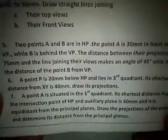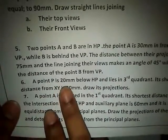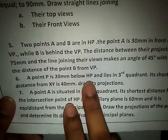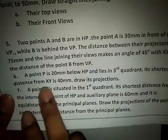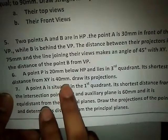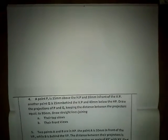We have a sixth equation, see here. A point capital P is 20mm below HP and lies in third quadrant. Shortest distance from XY reference line is going to be 40mm. So draw its projections. Let us check the shape of the question and we shall draw it.